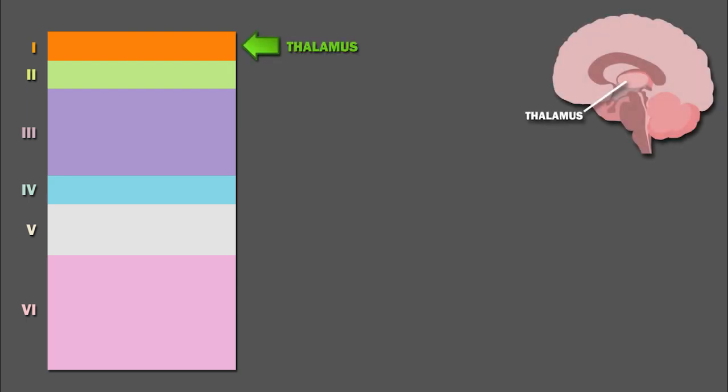Now that we've discussed the layers, let's do a brief overview of the connections formed by each layer. Layer 1 gets substantial input from the thalamus, specifically from matrix or M-type thalamus cells.